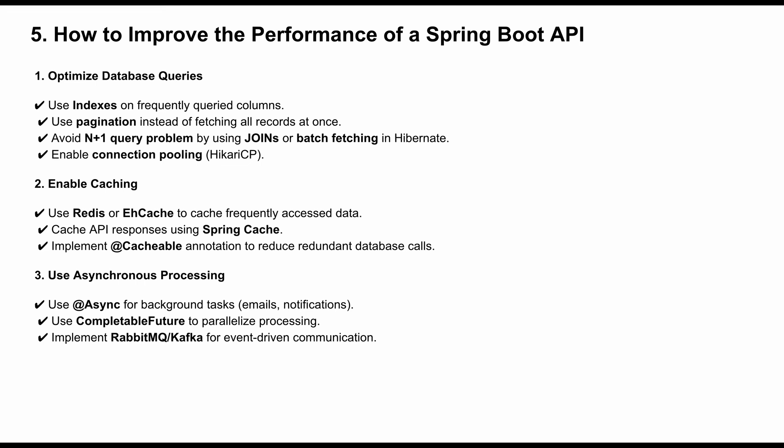The fifth question: how do you improve the performance of a Spring Boot API? First, optimize database queries: use indexing for frequently queried columns, use pagination instead of fetching all records at once, avoid N+1 query problems using joins or batch fetching in Hibernate, enable connection pooling with HikariCP. Enable caching: use Redis or Elasticsearch to cache frequently accessed data, cache API responses using Spring Cache with the @Cacheable annotation to reduce redundant database calls.